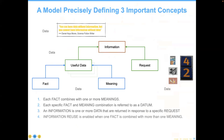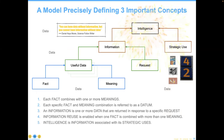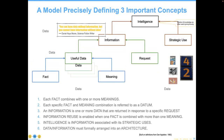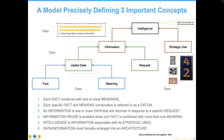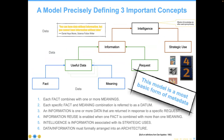It's obvious from this structure that you can have data without information, but you can't have information without data. So information literacy programs that are out there I think are pretty silly because they're not focusing on the right issue. There's one more level — how is the information used? We've called this over the decades wisdom, knowledge, and intelligence. But notice I've given you a fairly good metadata structure there. Data is a combination of facts and meaning. Information is data that has been provided in response to a request — these are objective criteria. And then intelligence is information that has been strategically used. This is the most basic form of metadata.